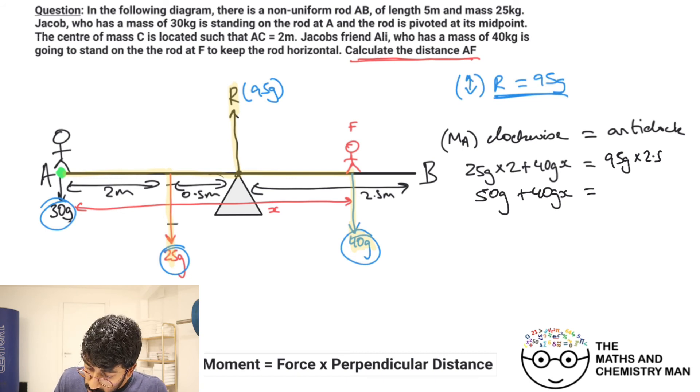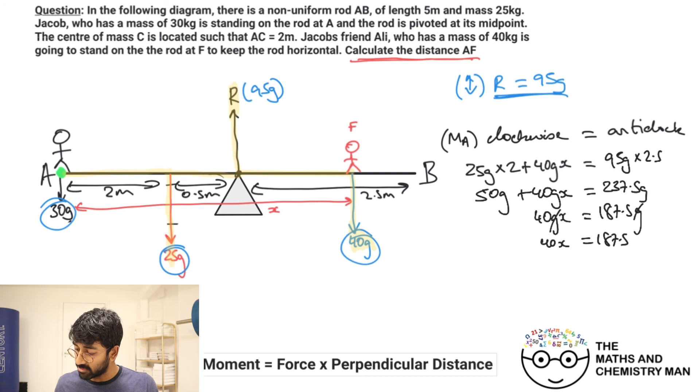On this side, we've got 50g plus 40gx is equal to 95 times by 2.5, which is 237.5g. Bring the 50 over, so take off 50, and we end up with 40gx is equal to 187.5g. Let's strike out the g's. So we've got 40x is equal to 187.5, and then divide that by 40 and we should get an answer of...